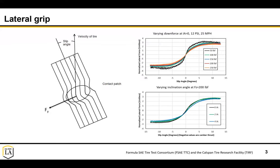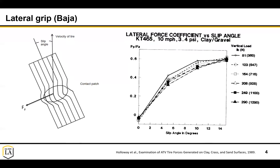This is what we've been talking about for a Formula vehicle so far. Pulling up some old data for a Baja vehicle, you'll see similar trends. As you increase the downforce, you're going to have decreased grip - decreased lateral force divided by downforce. So you want as little downforce on each tire as possible. The order of magnitudes are different though - 0.6 is the max grip you're going to get, and you're achieving it at much bigger slip angles.